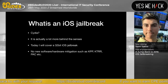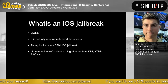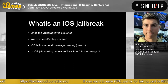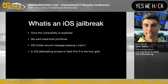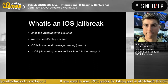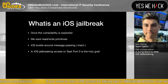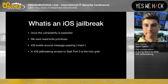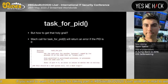On 32-bit iOS there are no software or hardware mitigations such as KPP, KTRR, or PAC, which newer jailbreaks have to deal with. That also means we can actually patch the text segment. Zero-days are expensive, so most jailbreaks rely on already published vulnerabilities. Once a vulnerability is exploited, we want to set up read-write primitives. iOS builds around message passing, and access to task_for_pid(0) — PID 0, the kernel — is the holy grail.